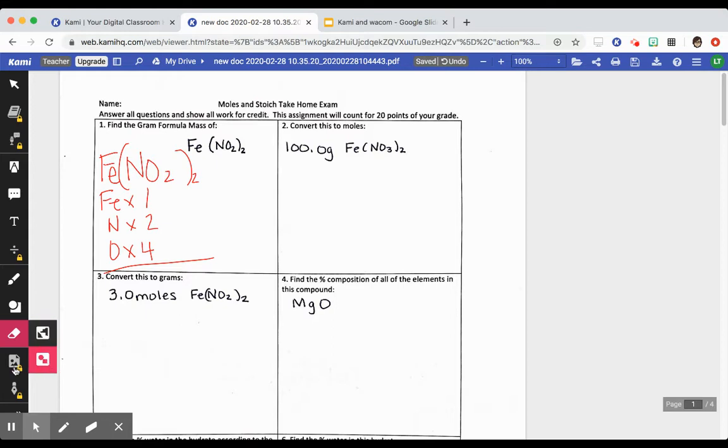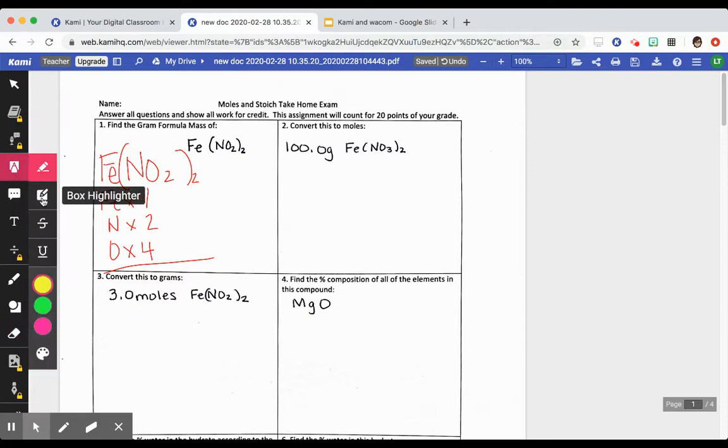I can also add annotations and more shapes. Some tools are locked depending on whether you have the upgraded version, which I don't. You can also add a text box, add a comment, and use other markup tools. You can highlight, use a highlighter, and add text boxes.